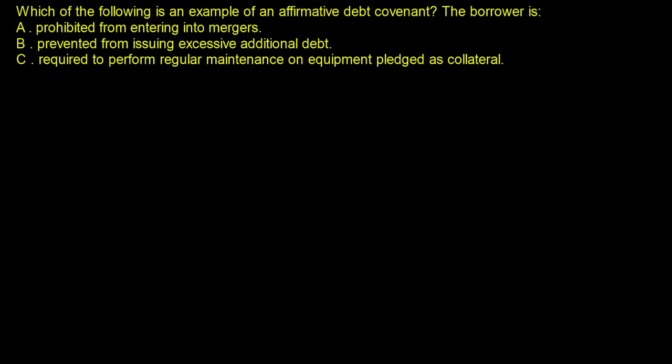This is a question about debt covenants — affirmative and negative debt covenants, positive and negative debt covenants. Which of the following is an example of an affirmative debt covenant? The borrower is A, prohibited from entering into mergers; B, prevented from issuing excessive additional debt; or C, required to perform regular maintenance on equipment pledged as collateral.